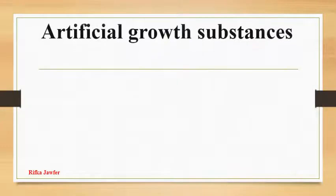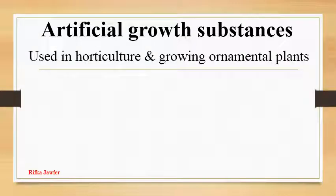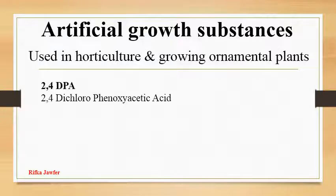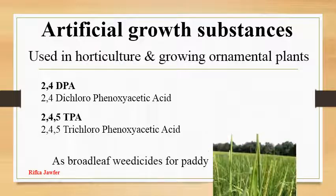There are artificial growth substances used in horticulture and growing ornamental plants. 2,4-dichlorophenoxyacetic acid and 2,4,5-trichlorophenoxyacetic acid are used as broadleaf herbicides for paddy.